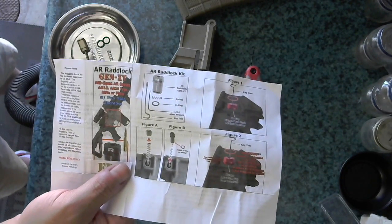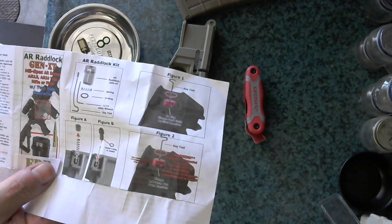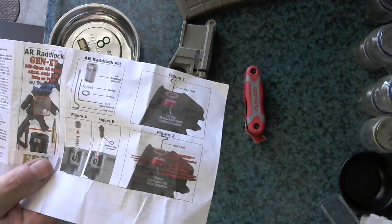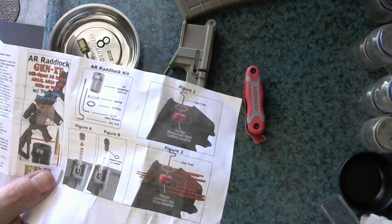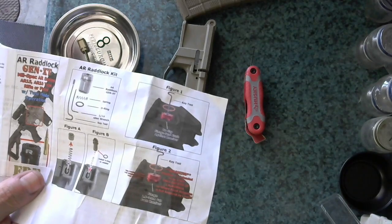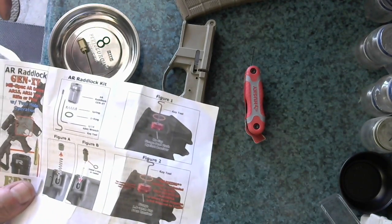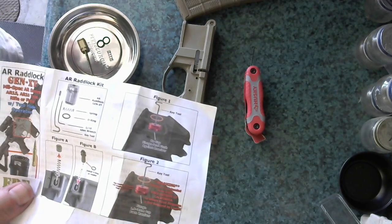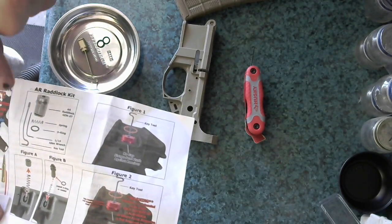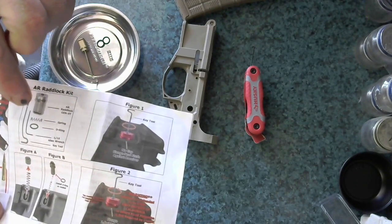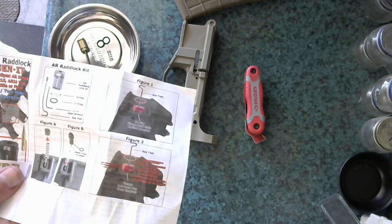So as I found in my last kit that I opened up, I was missing a part. For my polymer 80 lower, it was missing screws. In this case, the 1/16th Allen wrench wasn't in the kit whenever I opened it up.